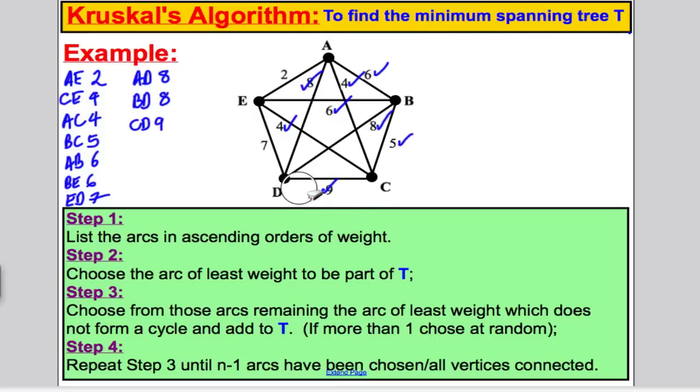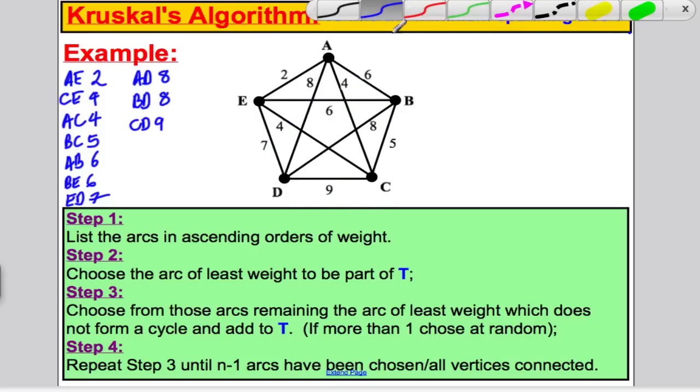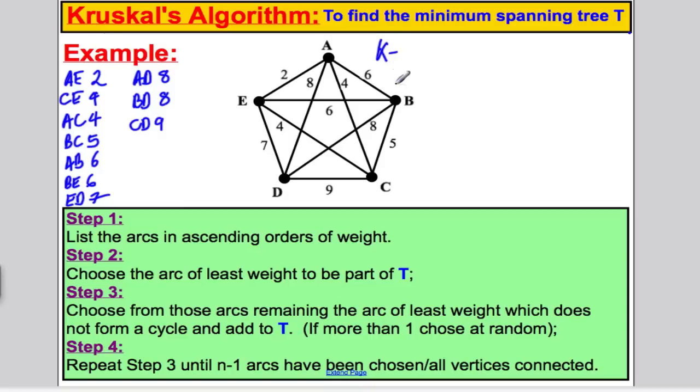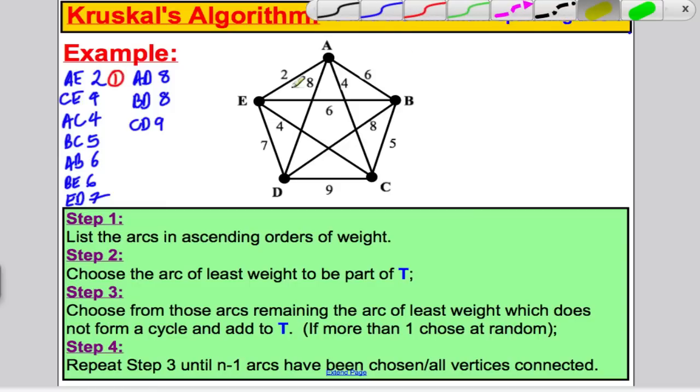I'm going to rub this off here because we've covered everything. How do we know we've covered everything? Well, we've got one, two, three, four, five, six, seven, eight, nine, ten. This is a complete graph. This is K5, you'll remember. K5 said the number of connections in K5 was N times N minus one over two, which would be five times four over two, which is ten. And we've got ten. So, we know we're done. That's step one. Then choose the arc of least weight to be part of T. So, this is the arc of least weight. I'm going to label that one. And in here, I'm going to draw AE as part of my graph there.